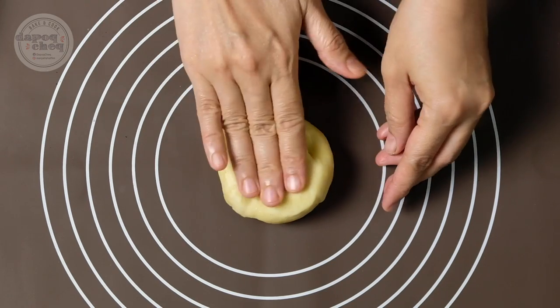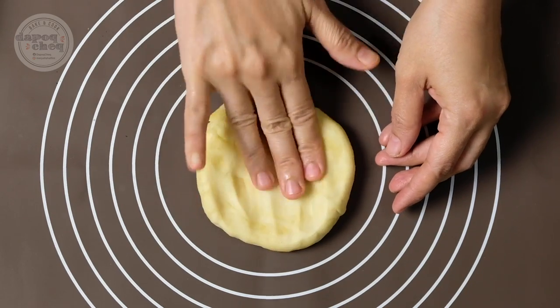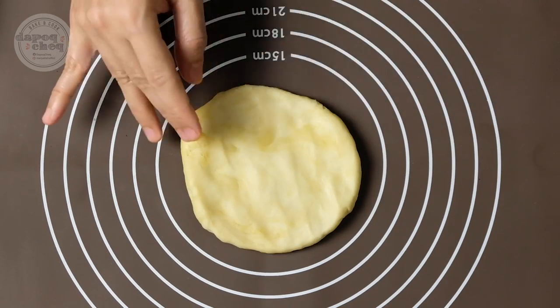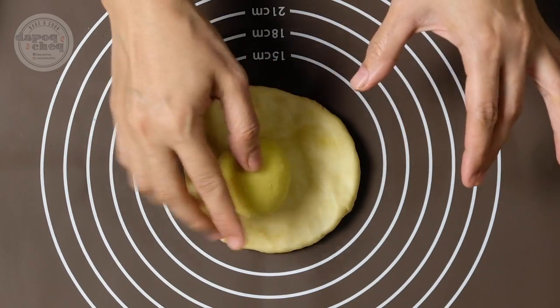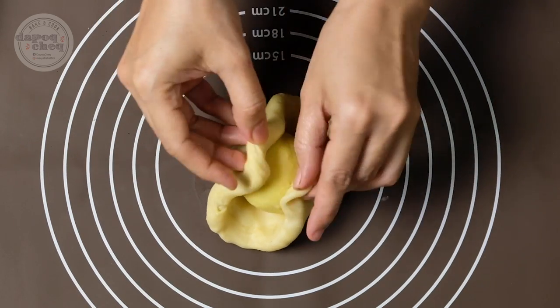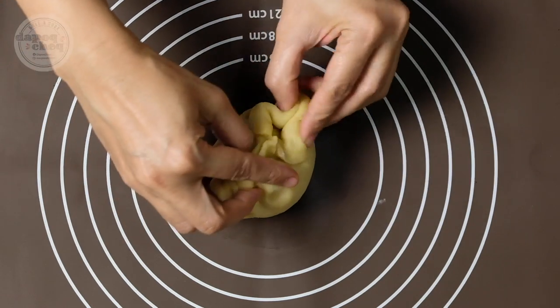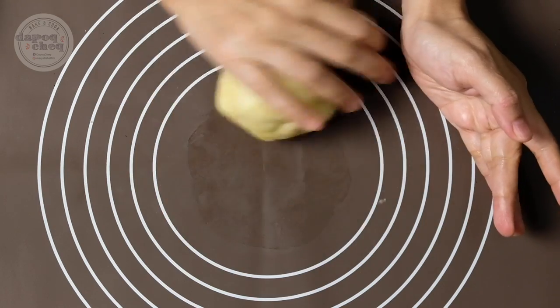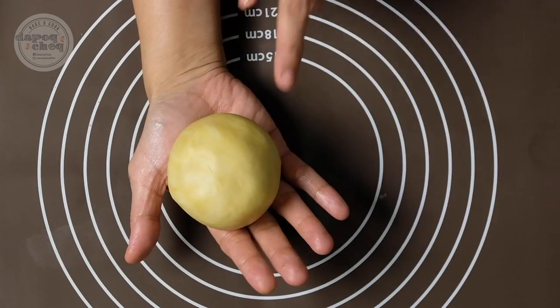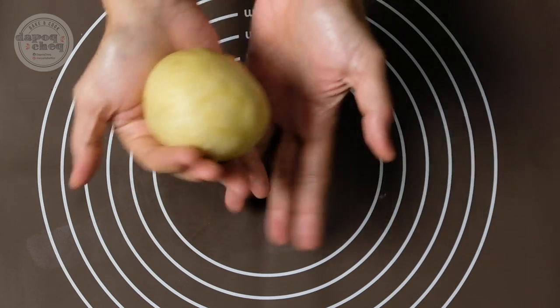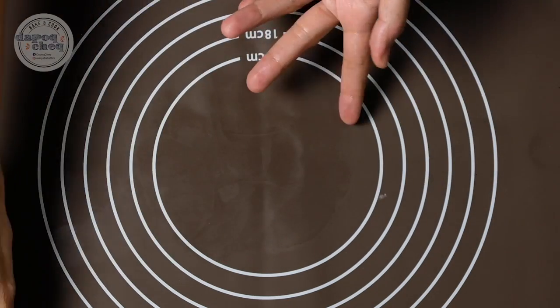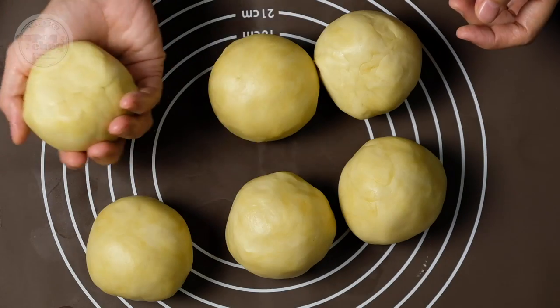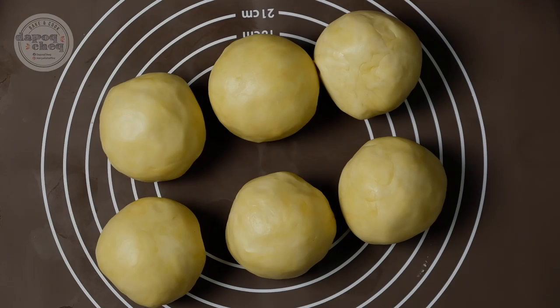Sekarang kita nak cantumkan dough biasa dengan dough minyak tadi. Yang ni Kak T ambil ni dough biasa, buat macam ni. Lepas tu ambil dough minyak, letak kat tengah, itu tutup. Buat bulat-bulat balik. Macam ni, dough minyak dia dah ada kat dalam. Tutup bagi rapat macam ni, tutup ulikan balik, bagi bulat balik. Buat semua enam-enam biji. Dah siap dah dough untuk karipap pusing. Dough minyak pun kita dah masukkan dalam dough biasa macam ni. So sekarang kita dah boleh canai.